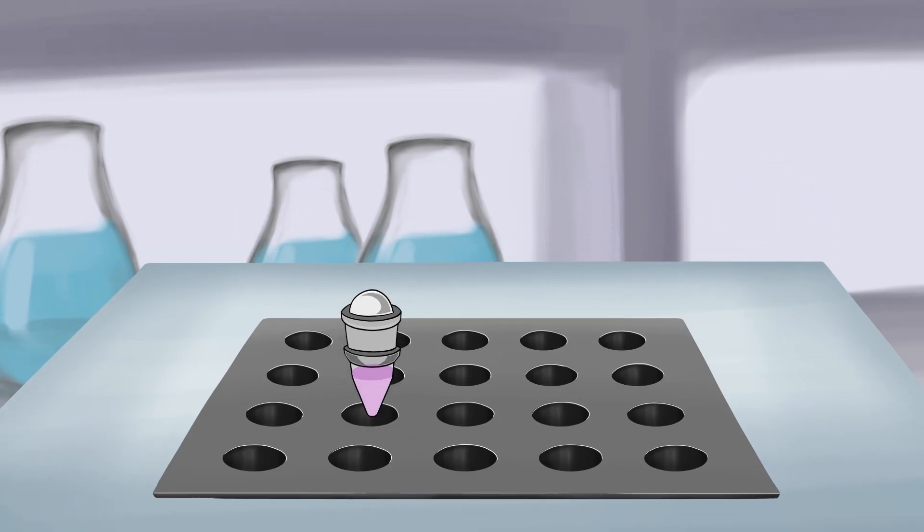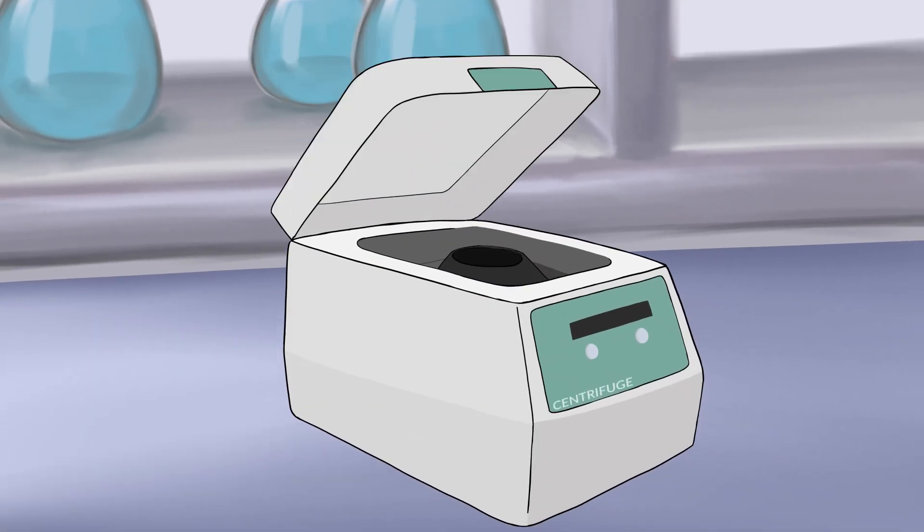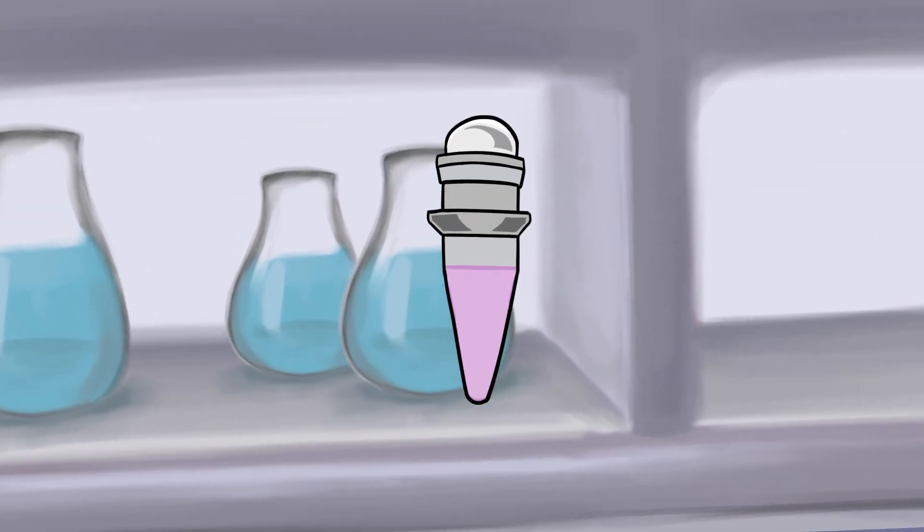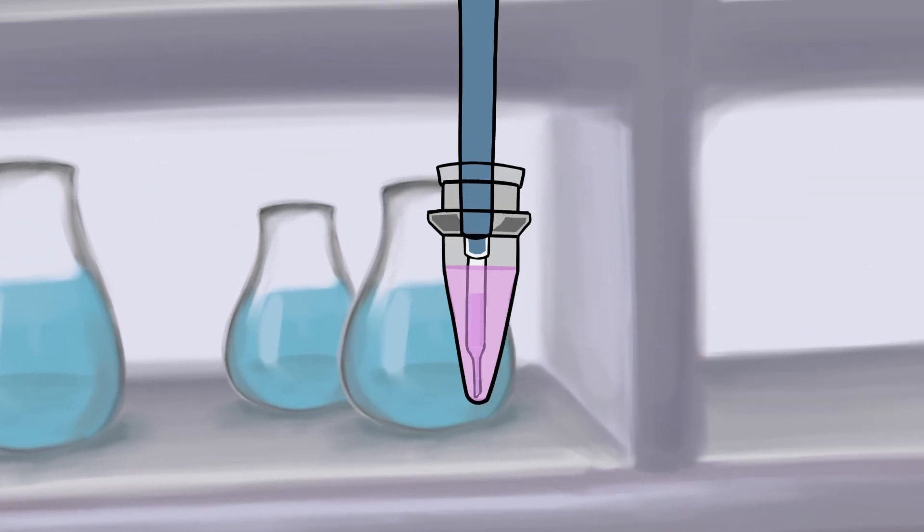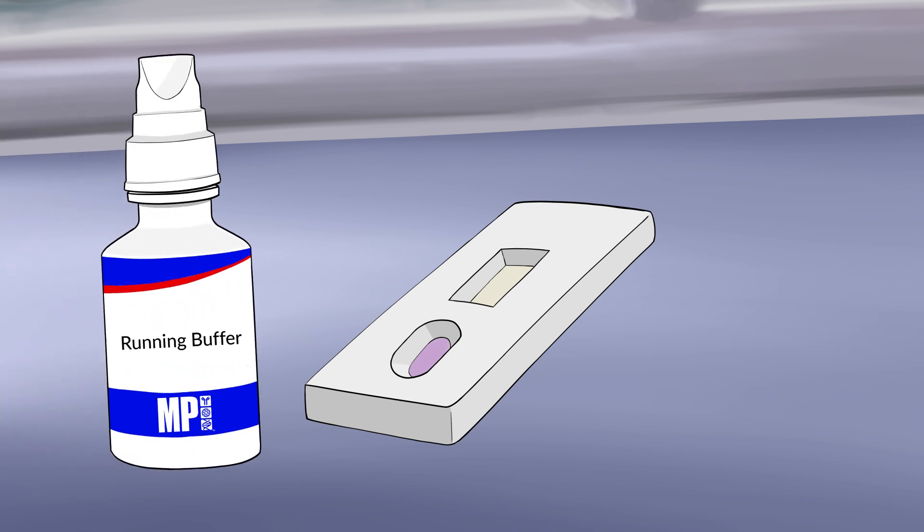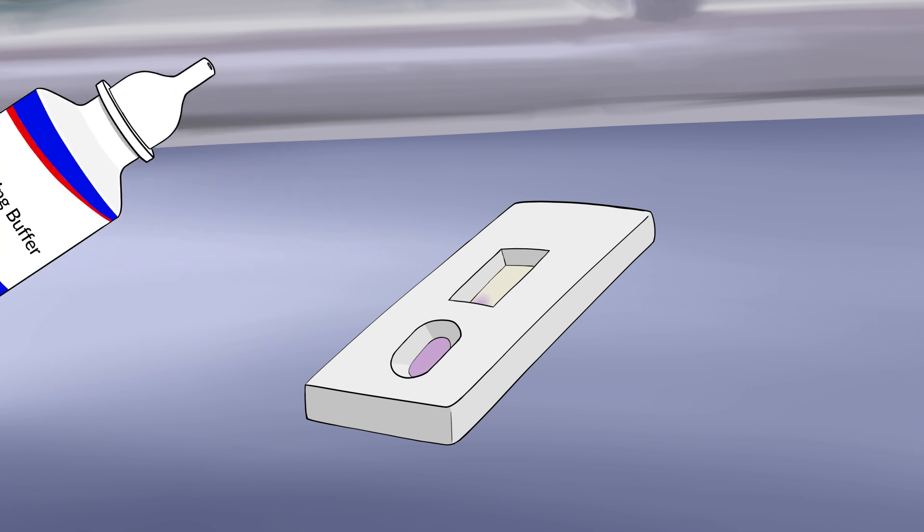After incubation, allow the reaction tube to cool down to room temperature, then briefly spin down the mix. Next, pipet 5 microliters of the reaction mix and load it into the sample well of the detection device. Add 3 drops of running buffer to the sample well and wait for 2 to 5 minutes for the results to develop.